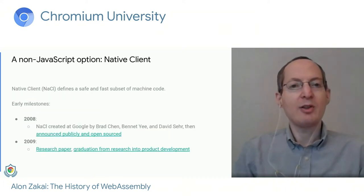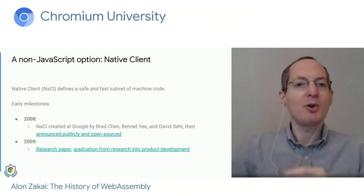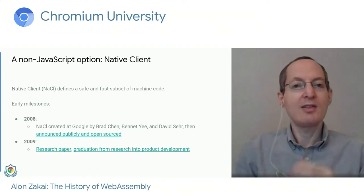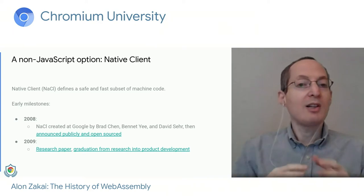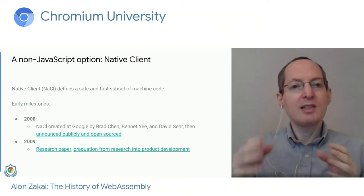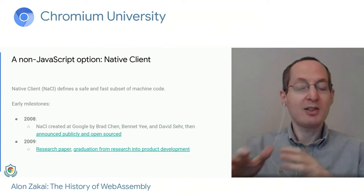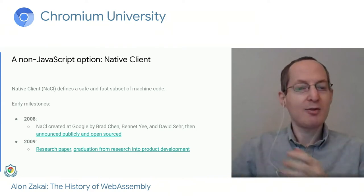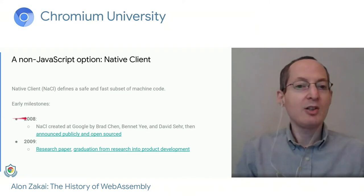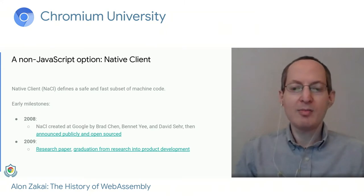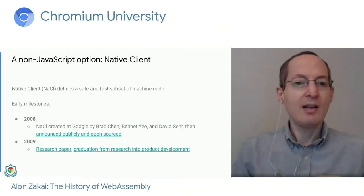One non-JavaScript option that's important in this history is the Native Client project. Native Client, or NaCl, is basically a safe and fast subset of machine code — very fast because it is machine code, but also safe. This started in 2008, created at Google by Brad Chen, Bennett E, and David Serer. In that year it was announced publicly and open sourced.